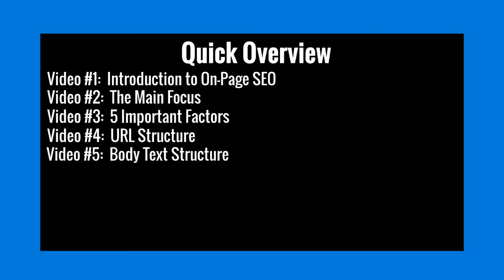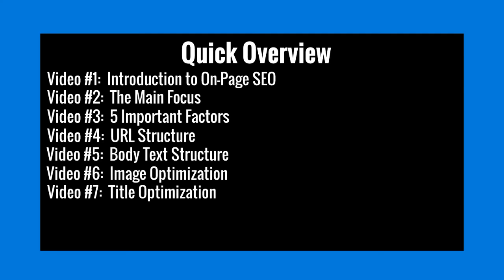Video number four, we're going to talk about URL structure — what your domain and URL should look like. Video number five covers body text structure. Video number six covers image optimization and how to make your images more search engine friendly. Video number seven covers title optimization and how long your title should be. Video number eight covers metadata optimization and how that affects what text and information shows up on the search engines.